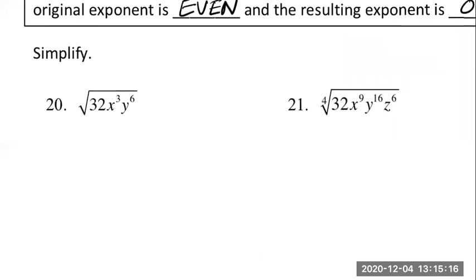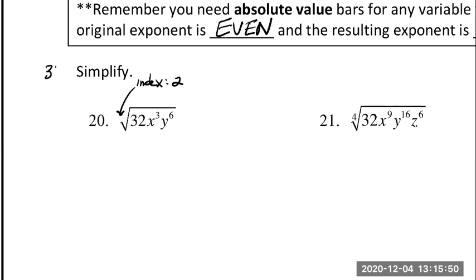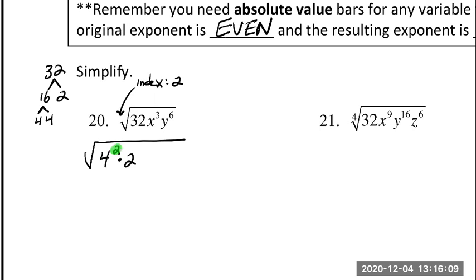So let's check out this first one and do a little review. First we look at what's the index. The index is the number written out in front, and if there is no number written out in front then it's understood mathematically to be a 2 — it's a square root. Now we need to write each part of this monomial so that their exponents are divisible by 2. So we need 32: 32 is 16 times 2, and 16 is 4 squared. So I could write 32 as 4 squared times 2, which is 16 times 2, which is 32. Now I have an exponent that is divisible by 2, by the index.